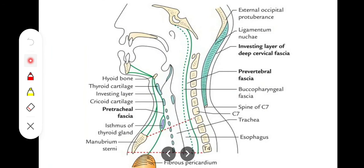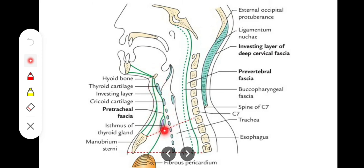To summarize the pre-tracheal fascia: in front of the tracheal ring, we have the pre-tracheal fascia. Superiorly, it attaches to the hyoid bone, the thyroid cartilage, and the cricoid cartilage. It encloses the thyroid gland. Inferiorly, it encloses the inferior thyroid veins, passes behind the brachiocephalic veins, and finally unites with the fibrous pericardium of the heart as well as with the arch of aorta.